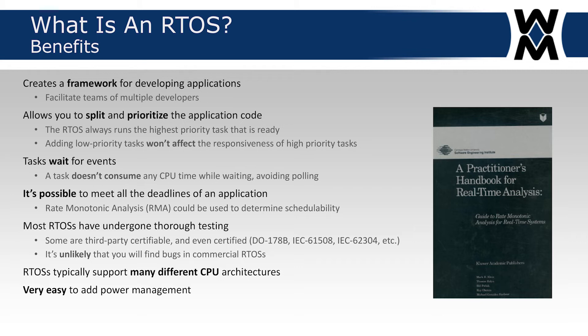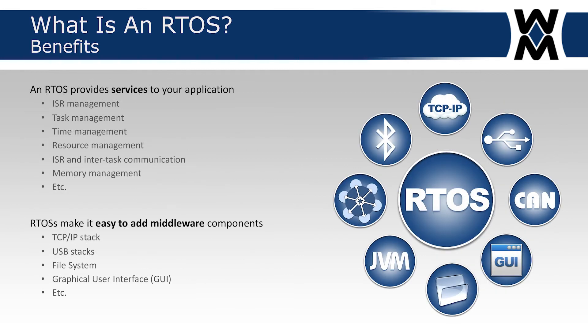Having an RTOS makes it quite easy to add power management — specifically when the RTOS has nothing to do because none of the tasks are ready to run, it runs the idle task, which can be put into a sleep mode where it won't consume as much CPU power. An event wakes it up and the RTOS schedules the next task. An RTOS provides services to the application — task management, ISR management, intertask communication, memory management, and so on. RTOSes also make it easy to add middleware components.